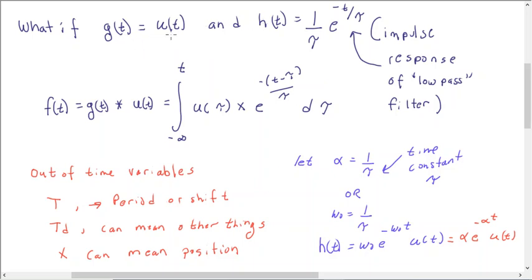So let's have g of t equals a step function, and h of t equals this, which is the impulse response of a low-pass filter. And it's 1 over tau, and e to the minus tau, which, if it were an RC circuit, it would be RC. If it was a cooling mass, it would be something else. So we put it into the convolution integral, u of tau times e to the minus t minus tau divided by tau. Wait, uh-oh.